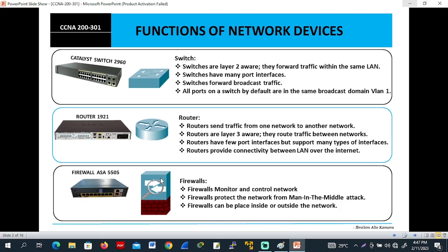Let's look at the functions of network devices. This symbol represents a switch in Cisco Packet Tracer — I will show you how to install Cisco Packet Tracer because we are going to use it for our labs. Switches are layer two devices. They forward traffic within the same LAN and don't route packets. Switches have many port interfaces and forward broadcast traffic. All ports on a switch by default are in the same broadcast domain, VLAN1. You will learn what is a VLAN, how to create a VLAN, and how to assign VLANs to different interfaces.